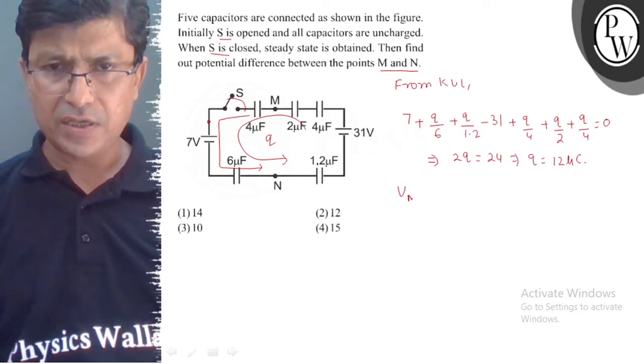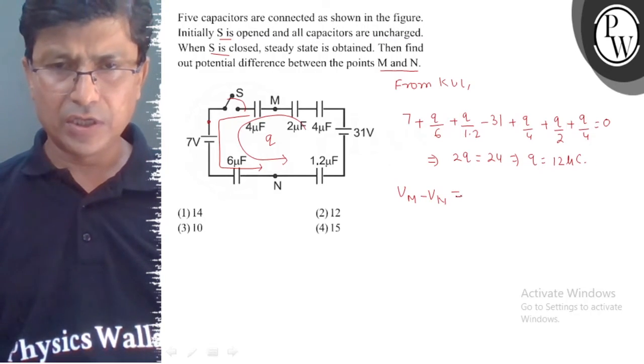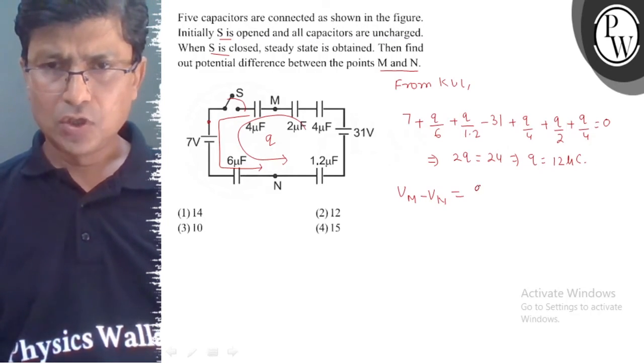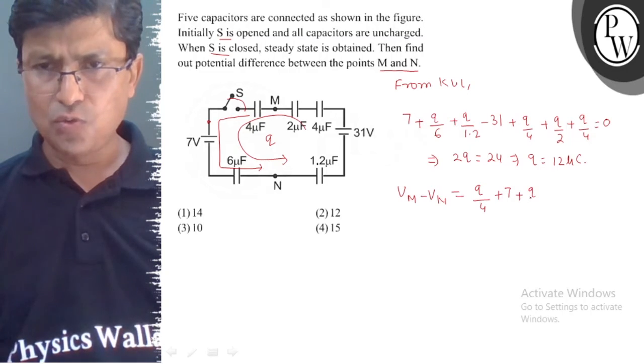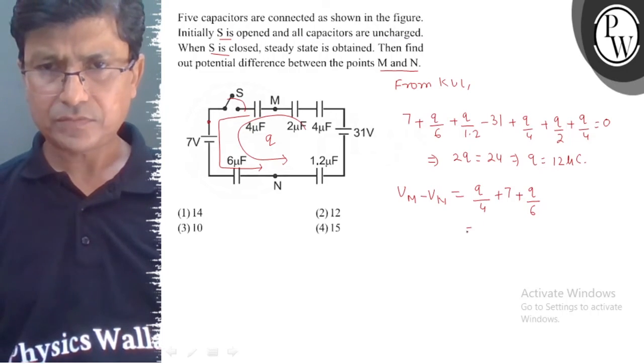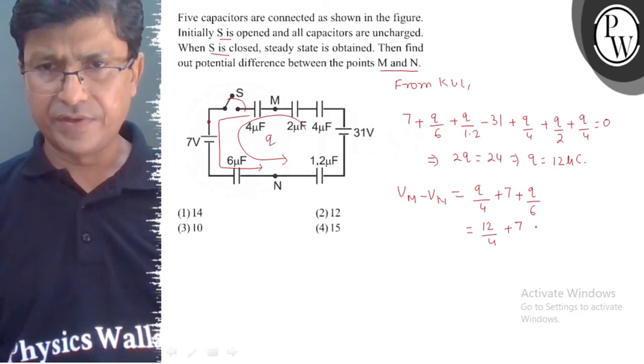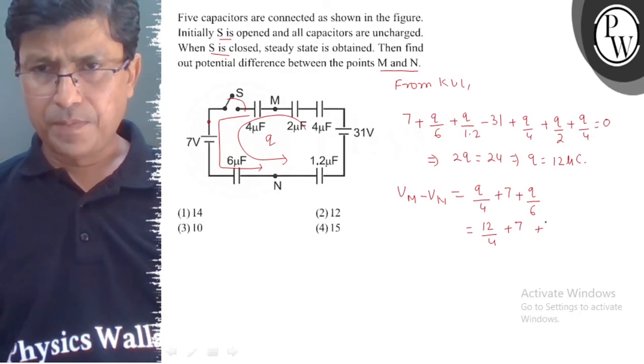VM minus VN will be Q by 4 plus 7 plus Q by 6, which means 12 microCoulombs by 4 plus 7 plus